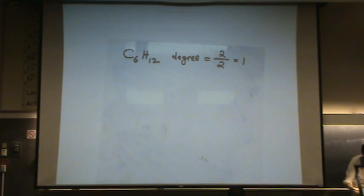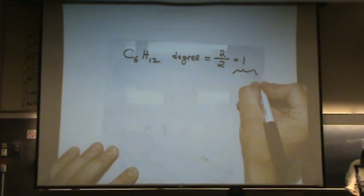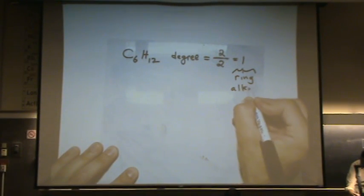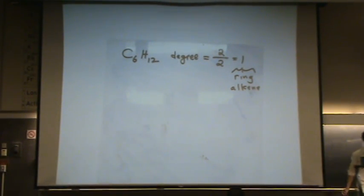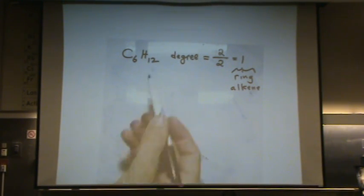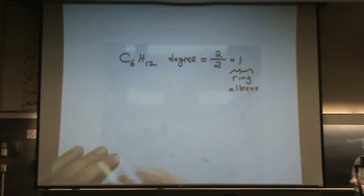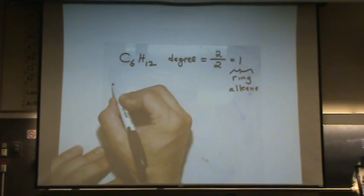That clues me in that I'm going to draw two different kinds of structures. I'm going to draw rings and I'm going to draw alkenes. Because those are the only ones, unless I had another oxygen or something here, that I could draw for a hydrocarbon. So I'm going to go my merry way now. I'll start with the alkenes.